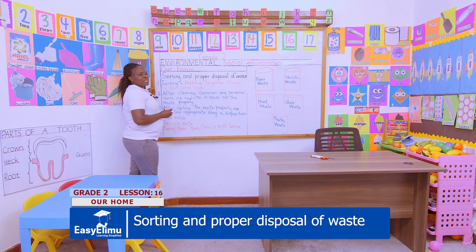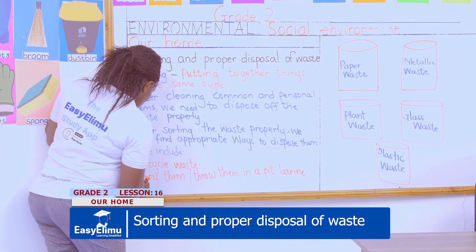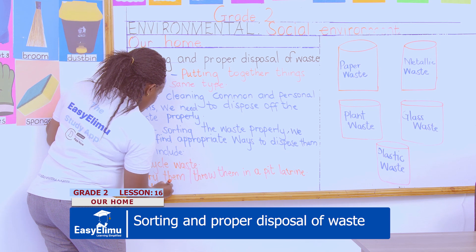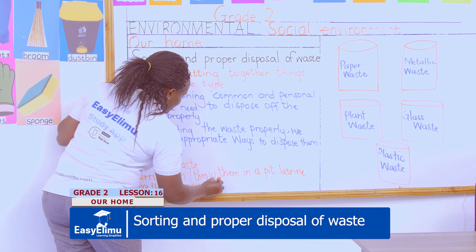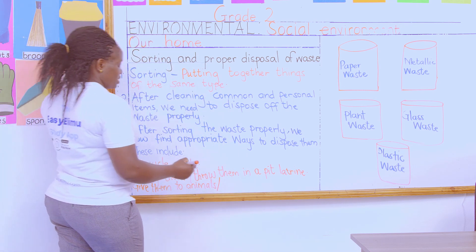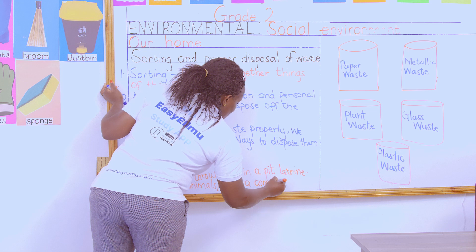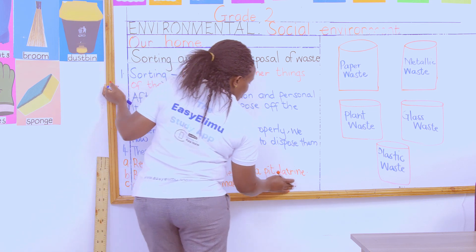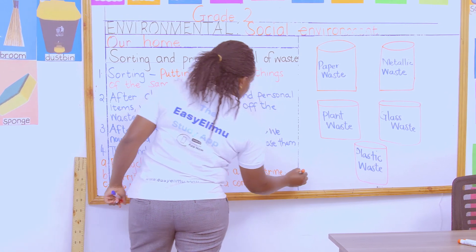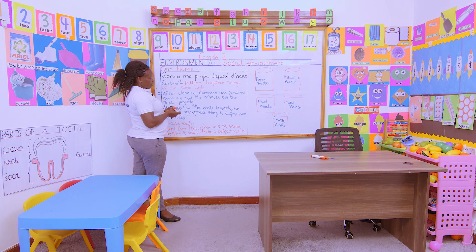I have vegetable remains and fruit peelings. What can I do? Some of these plant wastes are eaten by animals, so if I have animals around I can give them to the animals. If not, I can put them together to form a compost pit. Apart from giving them to animals, they can also be used to make compost manure, which can be used to add nutrients to plants.